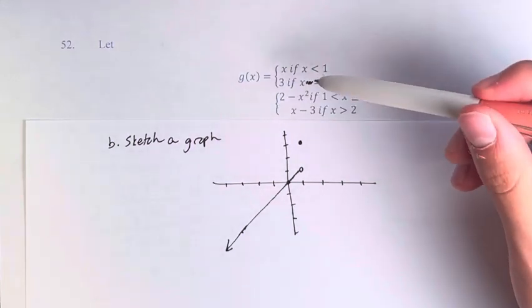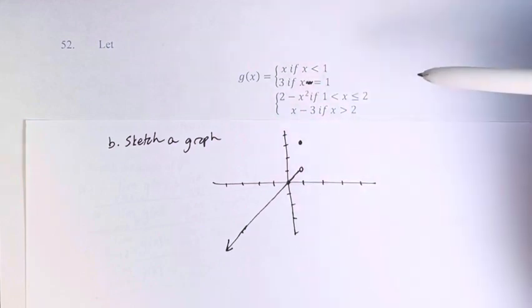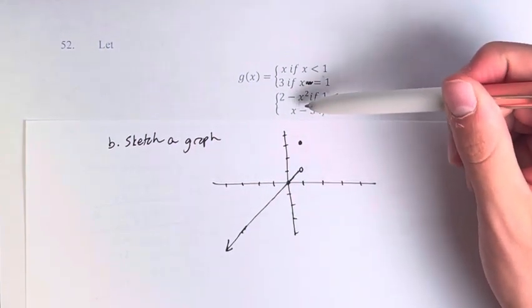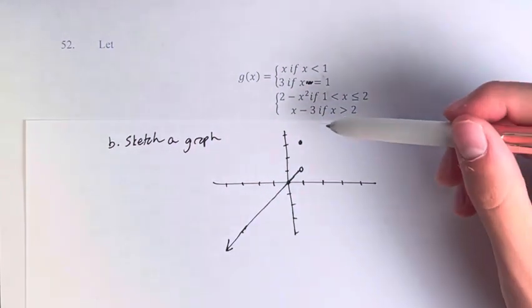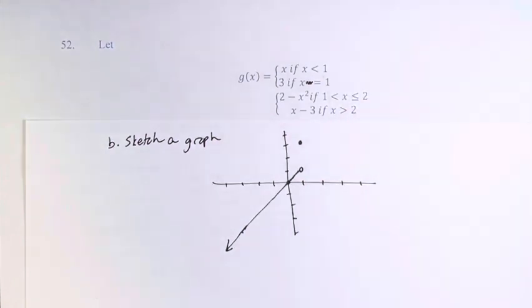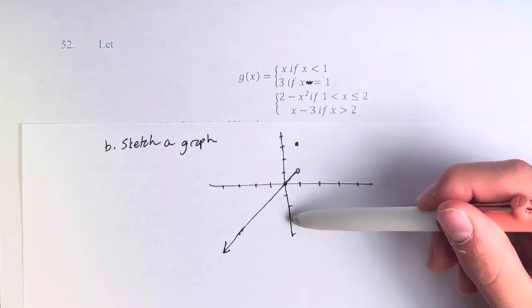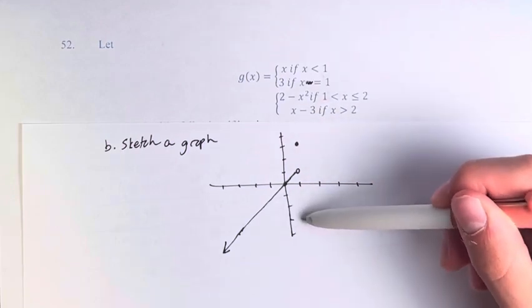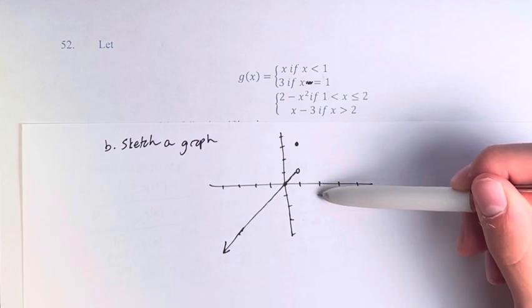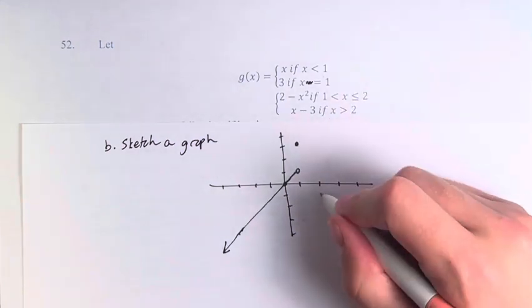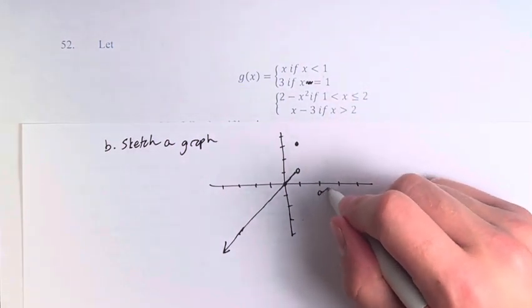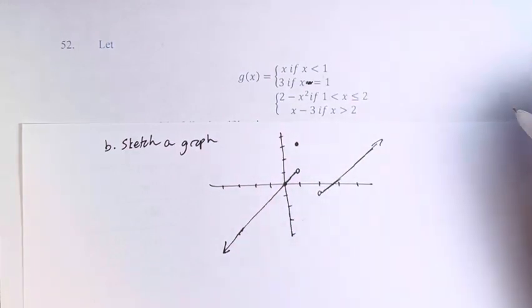I'm going to ignore this for a second but instead use x minus 3. So if x is greater than 2, we have x minus 3, so that's a y-intercept of negative 3, and then a slope again of 1, so we go over 1, up 1, over 1, up 1. And then we start here where x is greater than 2 and go off to infinity.